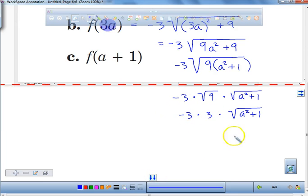So your final answer, if you multiply everything that you can multiply together, becomes negative 9 times the square root of a squared plus 1. This right here was probably the most difficult of all ones that you had to evaluate because you had to factor out the 9 and then you had to take the square root of it to get to the 3. This would be your final answer for me.